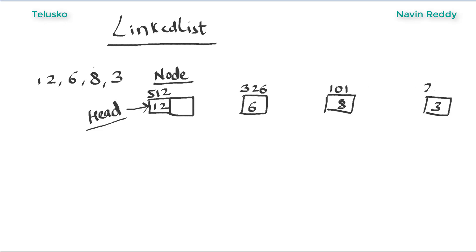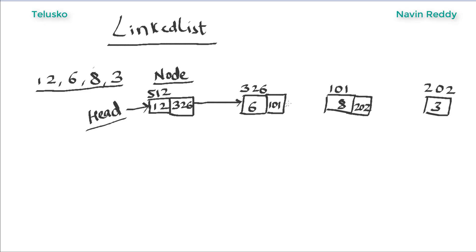The address for the last node is 202. Now this second box will hold the address of the next node. In our example, 6 is our next node, so we write 326 here — that's the address of 6. So there's a link between node 1 and node 2. Similarly in node 6, you store the address of 8, which is 101. And node 8 stores 202, which points to node 3. So we have these references creating links between all nodes.